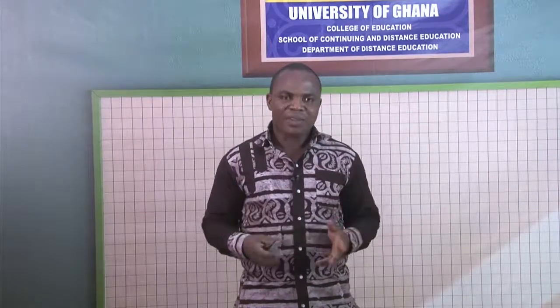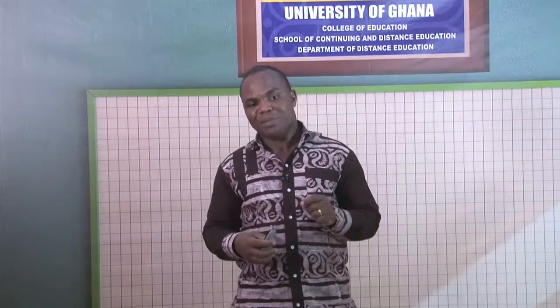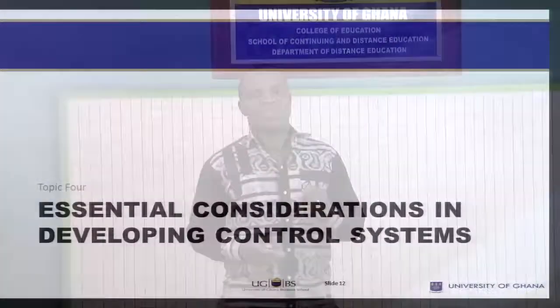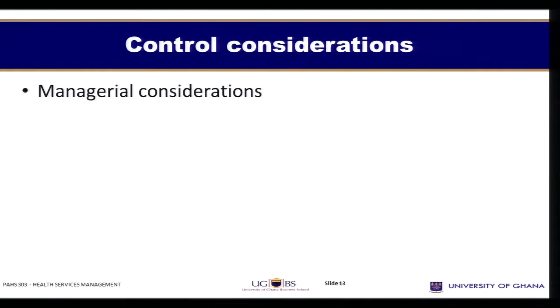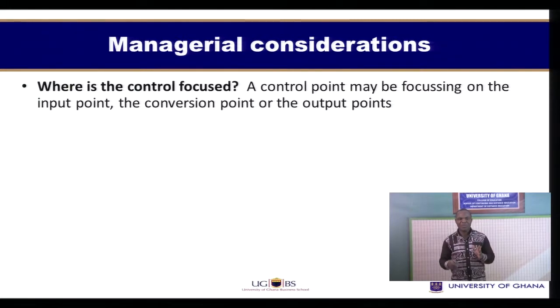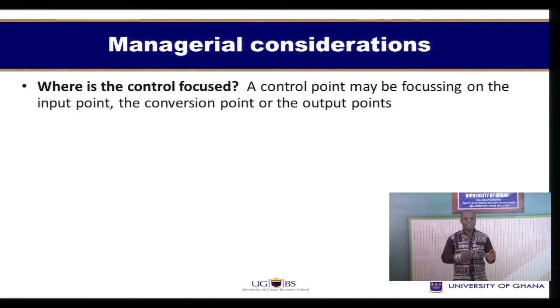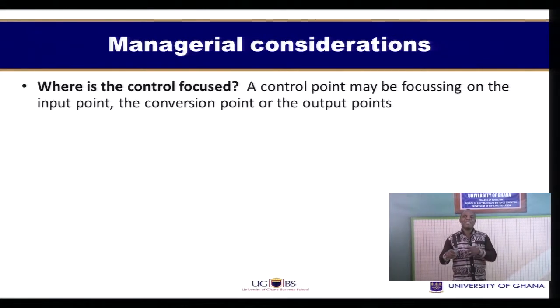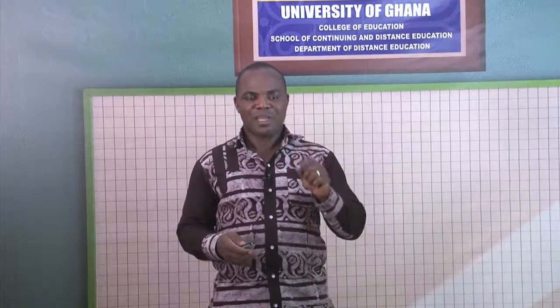When designing control systems, it is important that certain considerations are made. There are two general considerations: managerial considerations and design considerations. For managerial considerations, we need to think about where the focus of the control is. The control point may be focusing on input, the conversion process, or the output. Generically there are these three major aspects of the system: the input point, the process or conversion point, and then the output point. The focus must be determined by the manager.